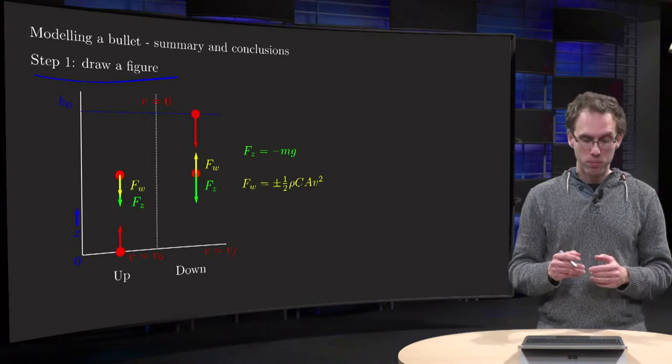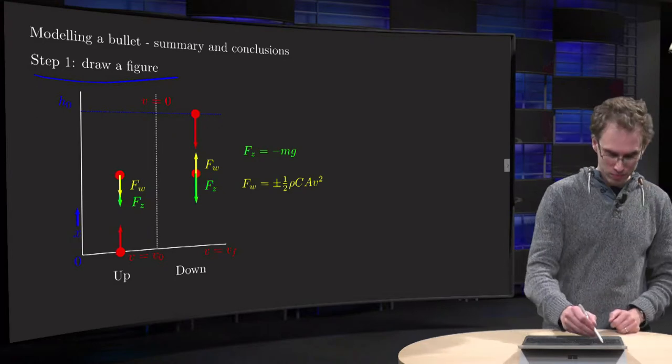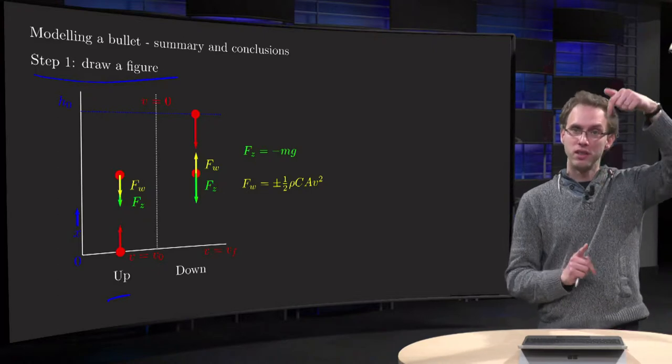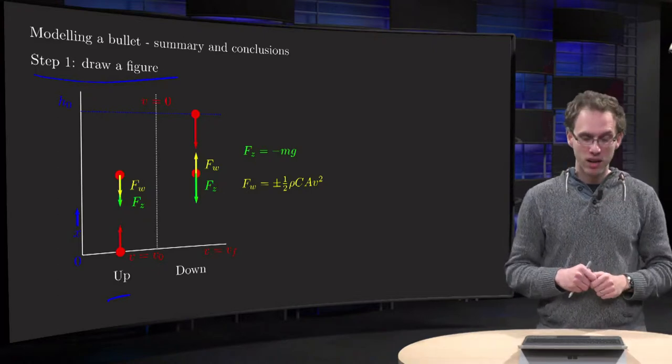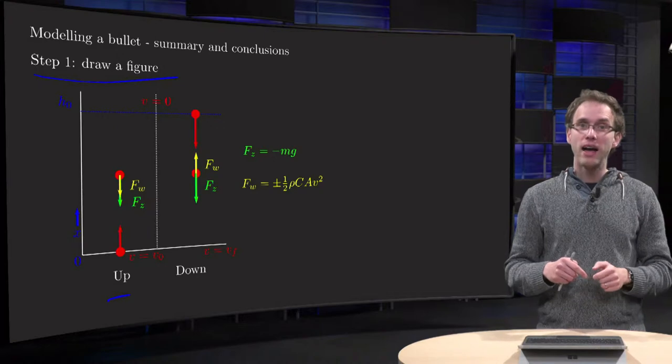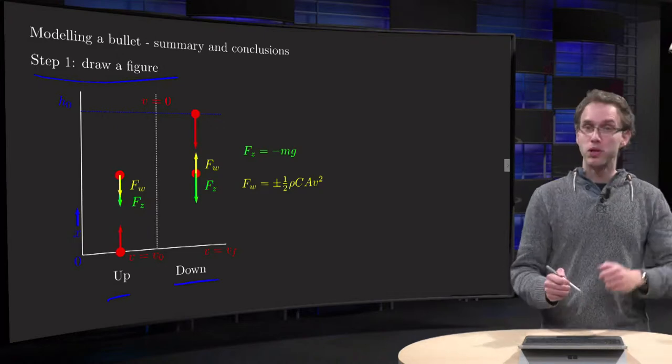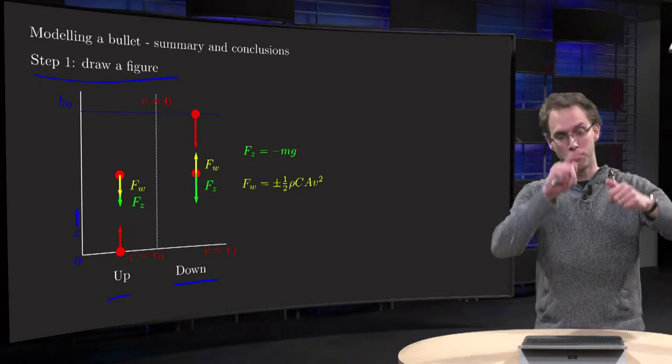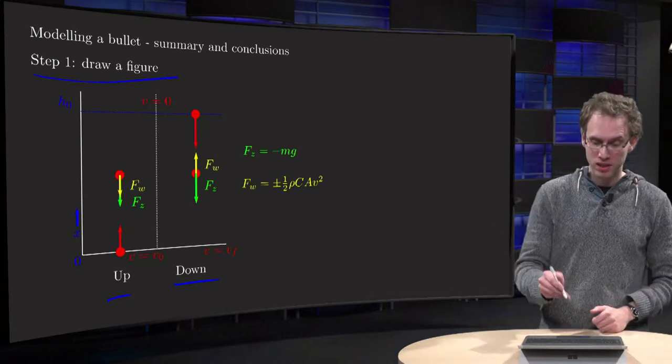You had your bullet going up first, where you put your frictional force and your gravity counteracting the velocity. And then, in the second step, you are going down.